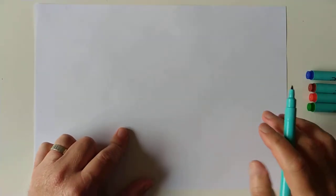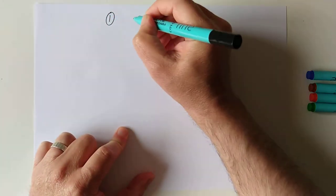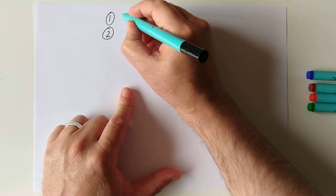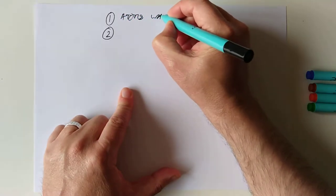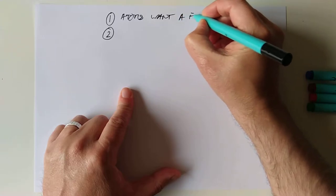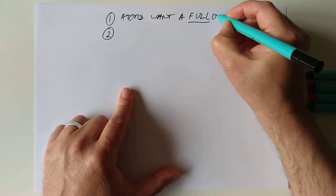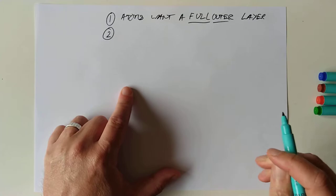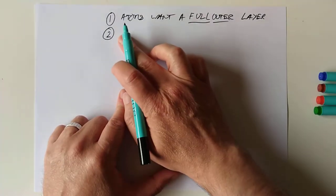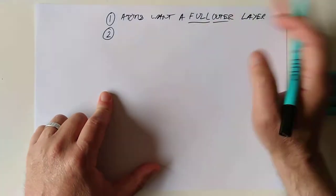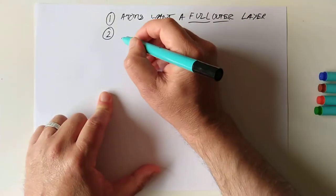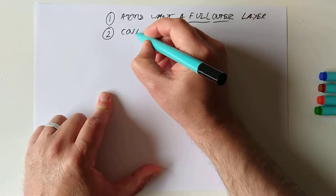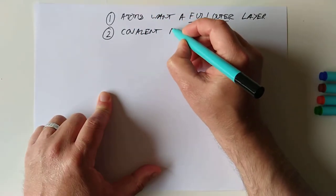Now, in today's lesson, I would like to look at two things. I would like to remind you of number one, and I would like to introduce possibly or remind you of number two. Number one is that atoms want a full outer layer of electrons. So they want a full outer layer. Last time, we looked at a way that they could do this. We looked at losing or gaining electrons to form ions. But this time, today, we're going to look at the second way that atoms can equip themselves with a full outer layer of electrons. That's by sharing electrons with each other. And when they do that, we call that covalent bonding.